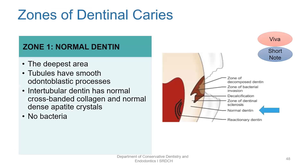There are five zones of dentinal caries. The deepest zone is the normal dentin. Here, the odontoblastic processes are smooth within the dentinal tubules and there is normal cross-banding of collagen and normal dense apatite crystals. This is a bacteria-free zone.